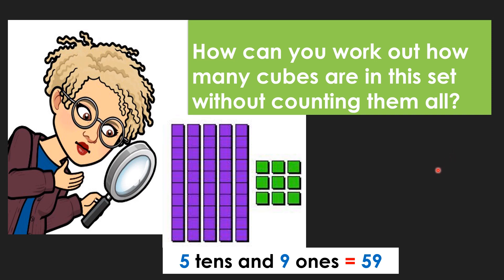Let's look a bit closer at this idea. How can we work out cubes without counting them all? We have to think in tens and ones, of course. There are one, two, three, four, five groups of tens and one, two, three, four, five, six, seven, eight, nine ones. We know through working through this lesson that five tens and nine ones, when they come together, make the number 59.